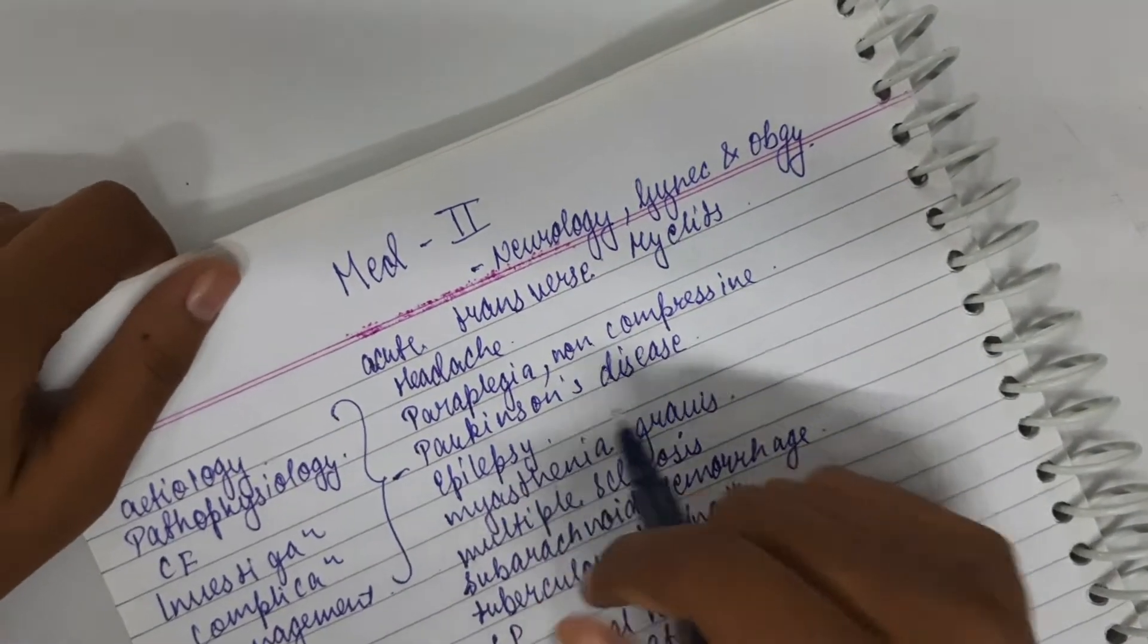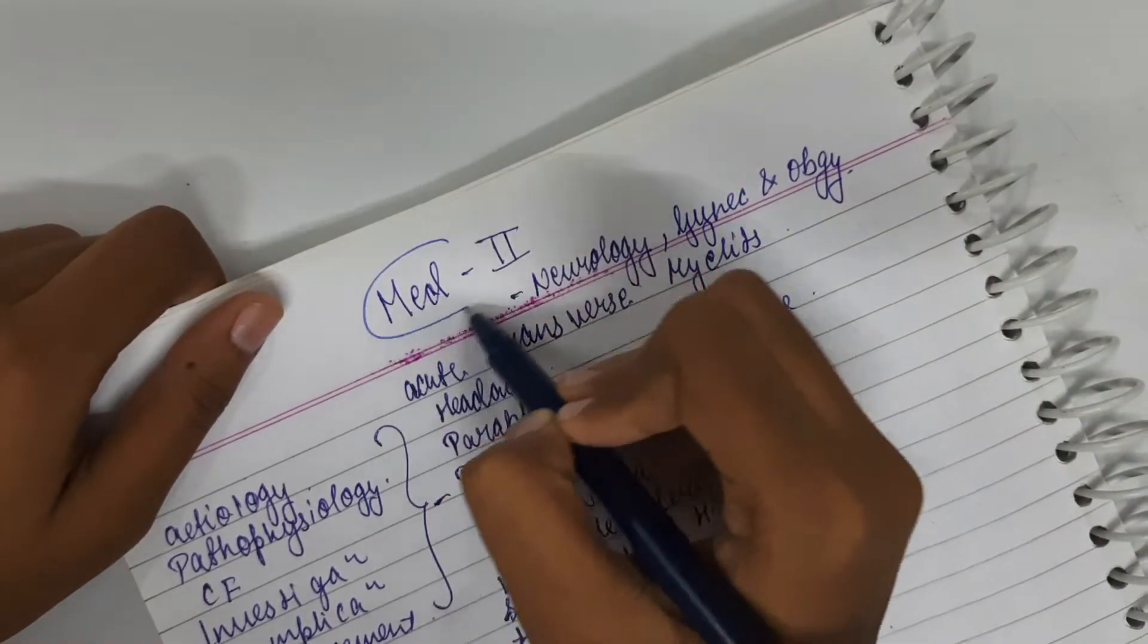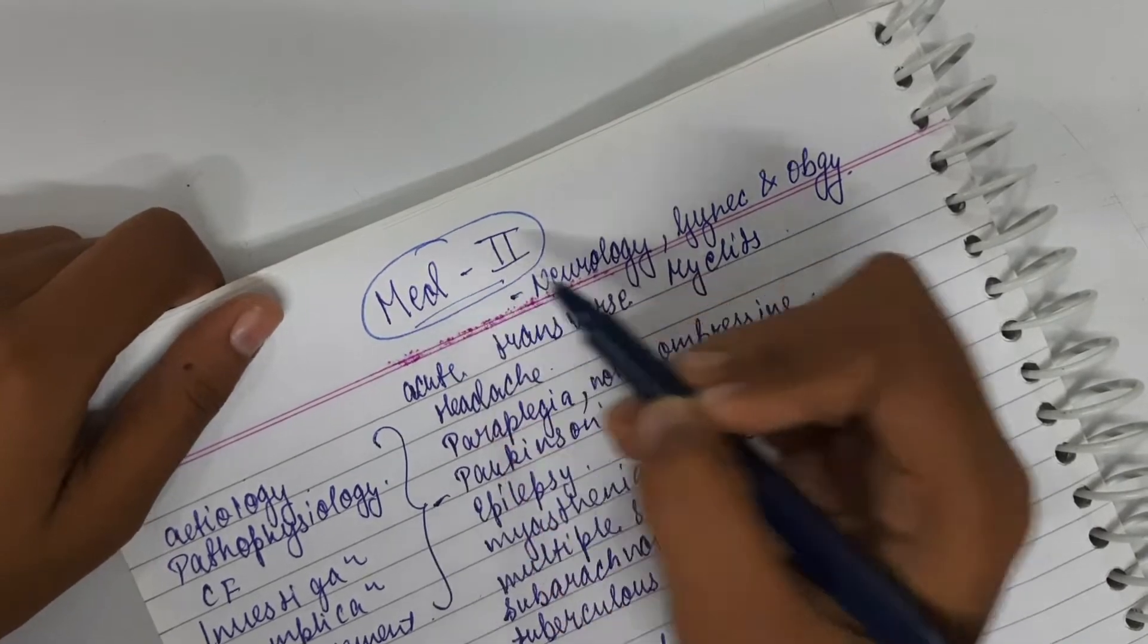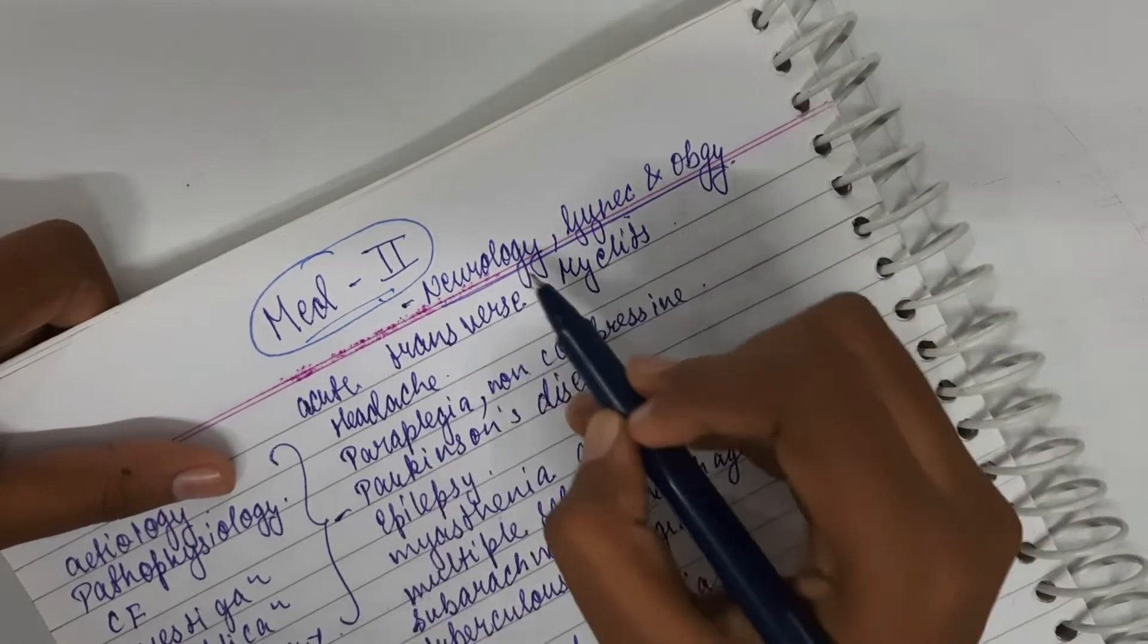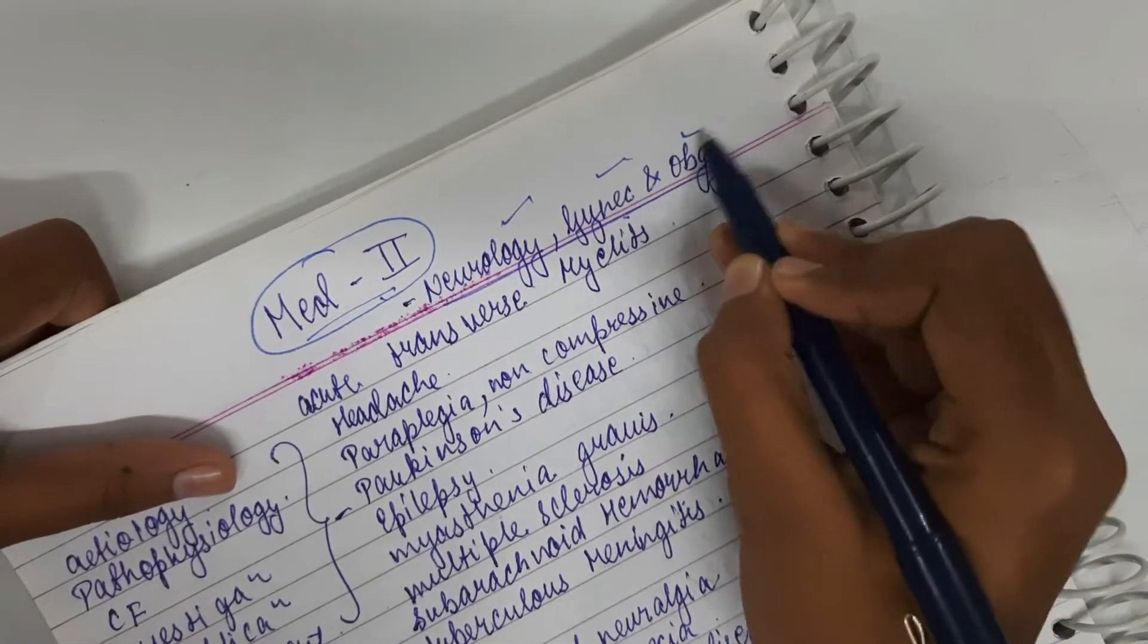Hello guys, welcome back to my brand physio. So today in this video, we're going to see important topics and questions of medicine two. In medicine two, these are the following sub-subjects or subjects which come under medicine two: that is neurology, gynec and obstetrics.